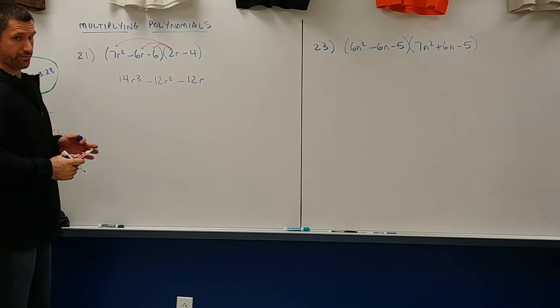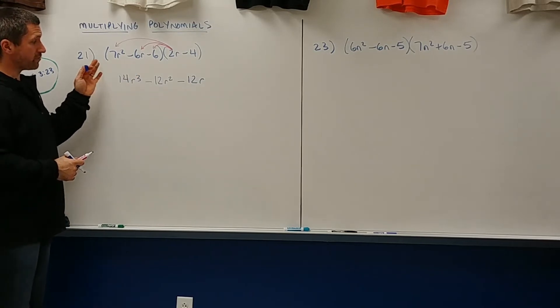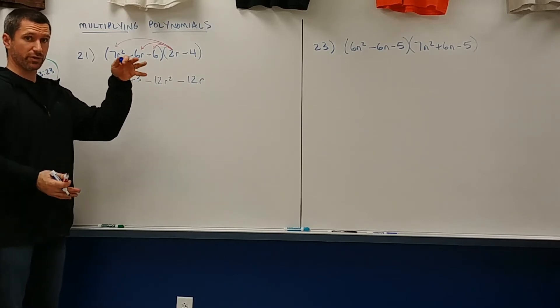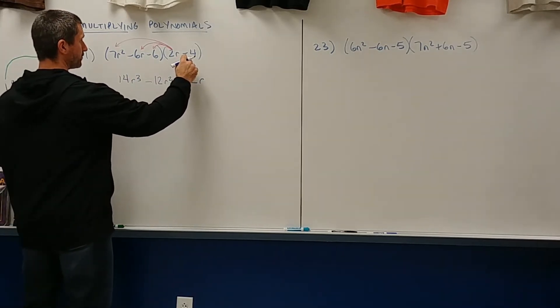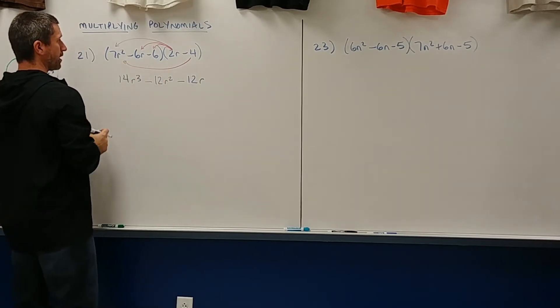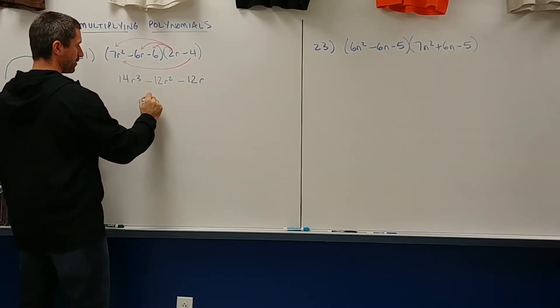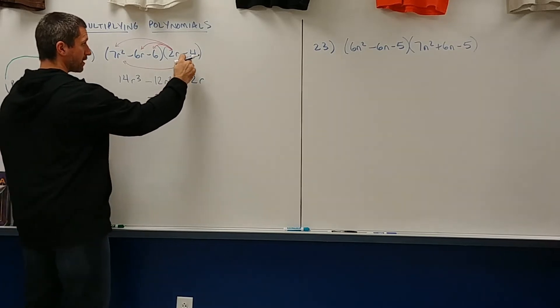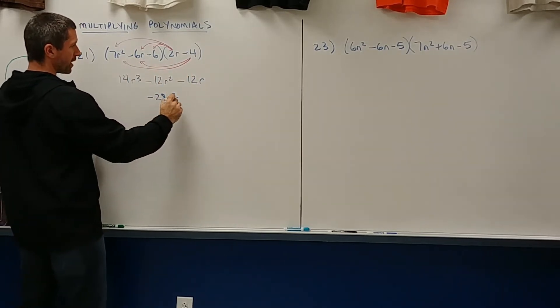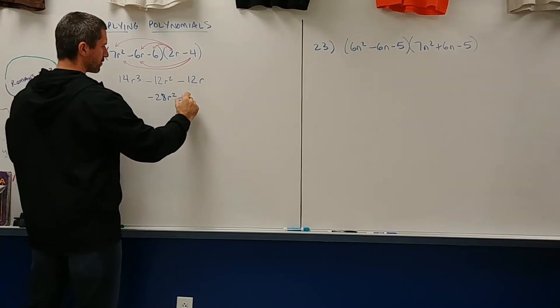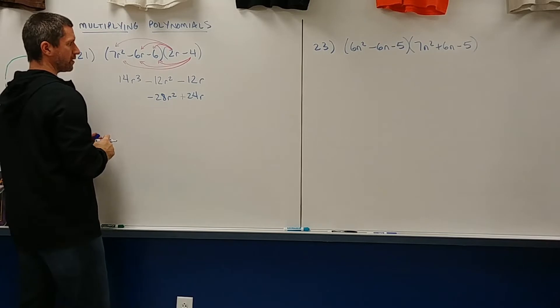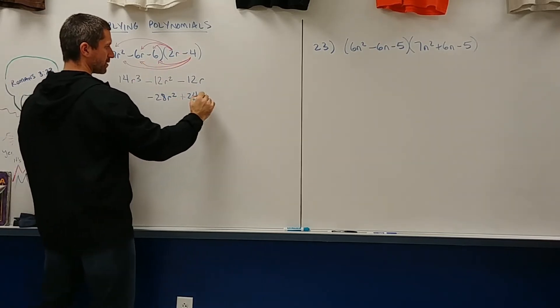Now we're gonna go from the negative 4, and we're gonna distribute. But when I do this, I'm gonna line up my terms so that you can see, by degree, that we're gonna combine our like terms. So negative 4 times 7R squared is negative 28R squared. And notice I put it underneath the negative 12R squared for its like term. Negative 4 times negative 6R is positive 24R. And then this multiplication, which is our last one, is negative 4 times negative 6 is positive 24.